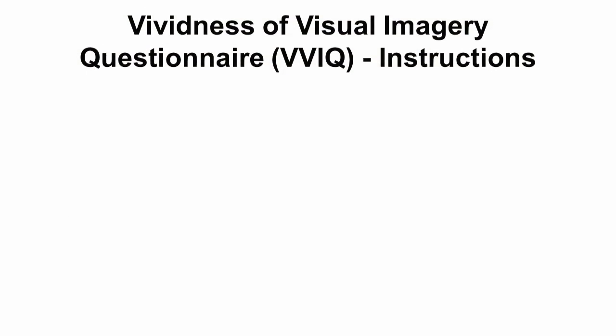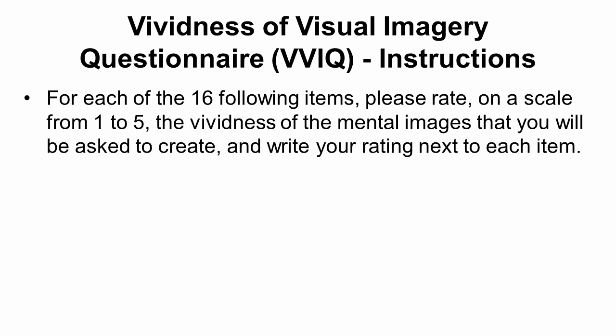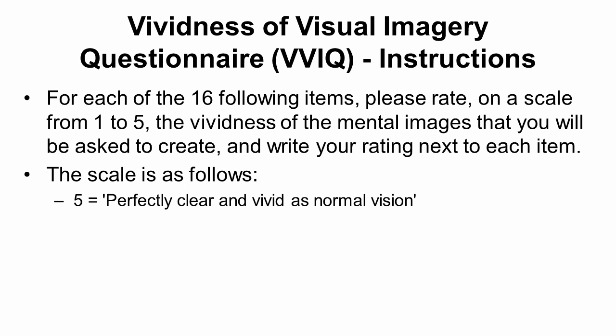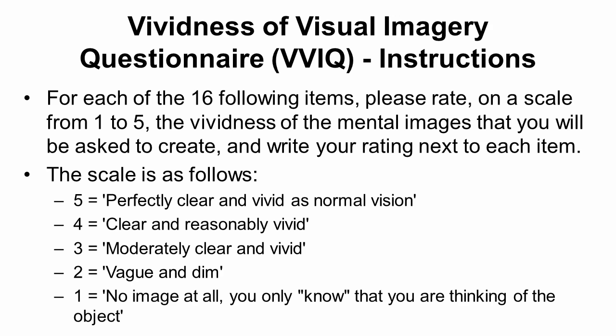If the experiment seemed confusing, it might be because you aren't the best mental imager. There are definitely differences between people in terms of mental imagery ability — some people are good imagers and some are poor imagers. This is the Vividness of Visual Imagery Questionnaire, or the VVIQ, which was given to all participants. To see how good your visual imagery is, you imagine a series of pictures and rate them on a scale of 1 to 5, where 5 is perfectly clear and as vivid as real perception, and 1 is no image at all.